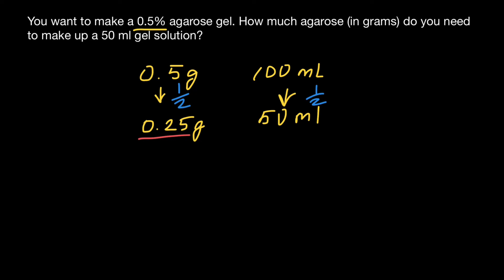The mathematical method would be as follows. If we start with 0.5 grams of agarose per 100 milliliters,